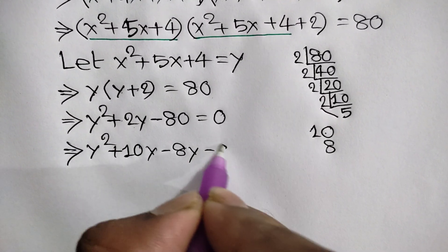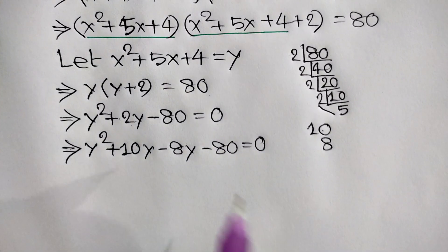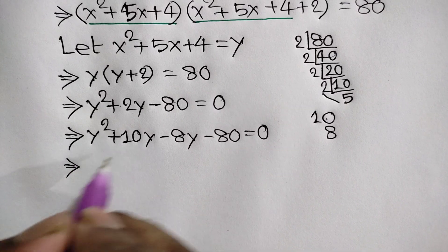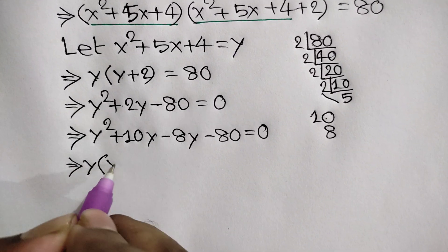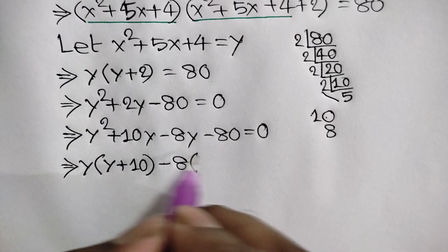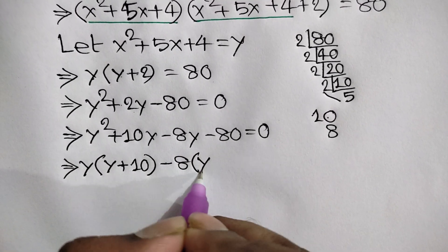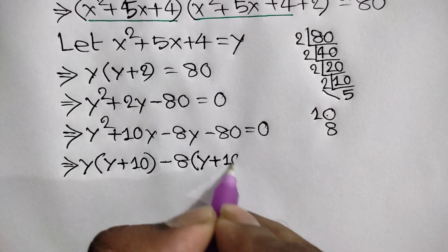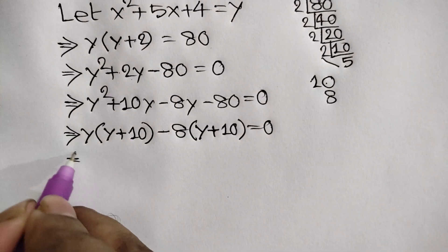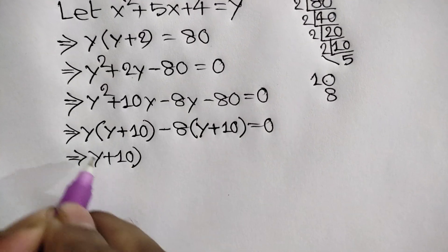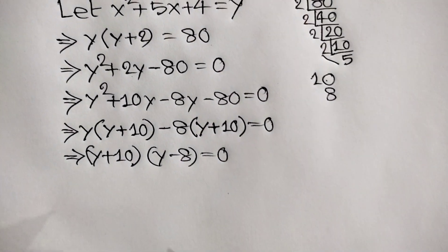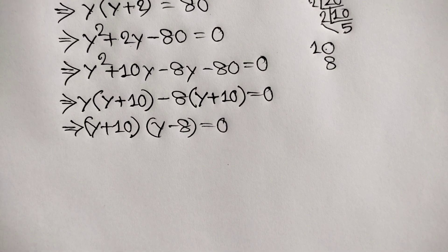Taking y common from the first two terms gives y(y + 10), and taking −8 common from the last two terms gives −8(y + 10) = 0. Taking (y + 10) common: (y + 10)(y − 8) = 0.